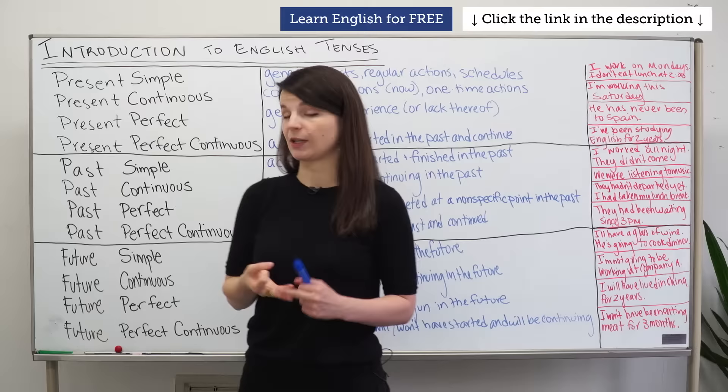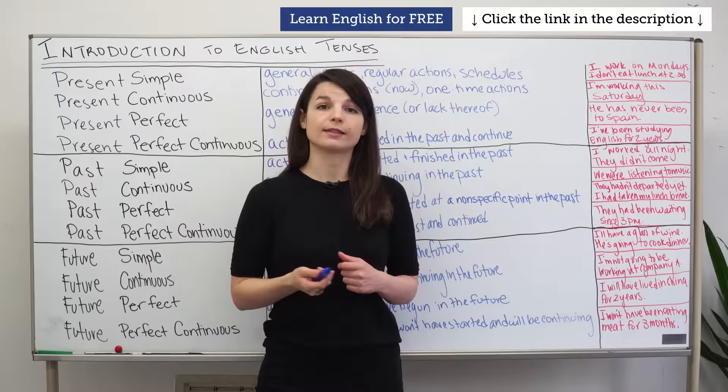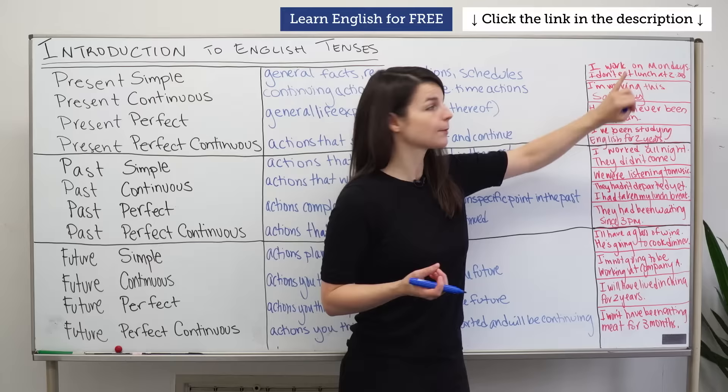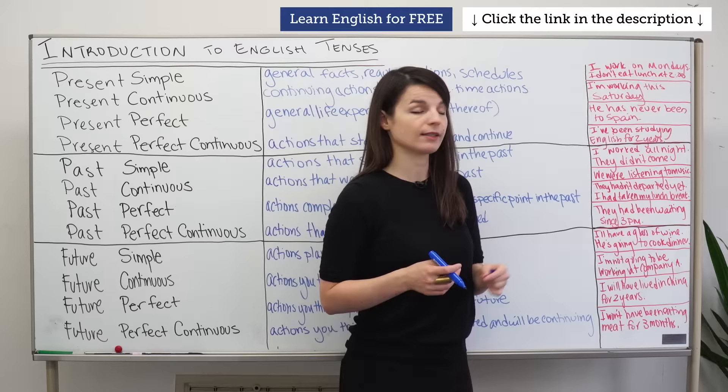Two examples of using the present simple tense: 'I work on Mondays' — here 'work' is my verb, simple present tense. A negative: 'I don't eat lunch at two o'clock.' These are simple present tense statements — just simple statements of fact.